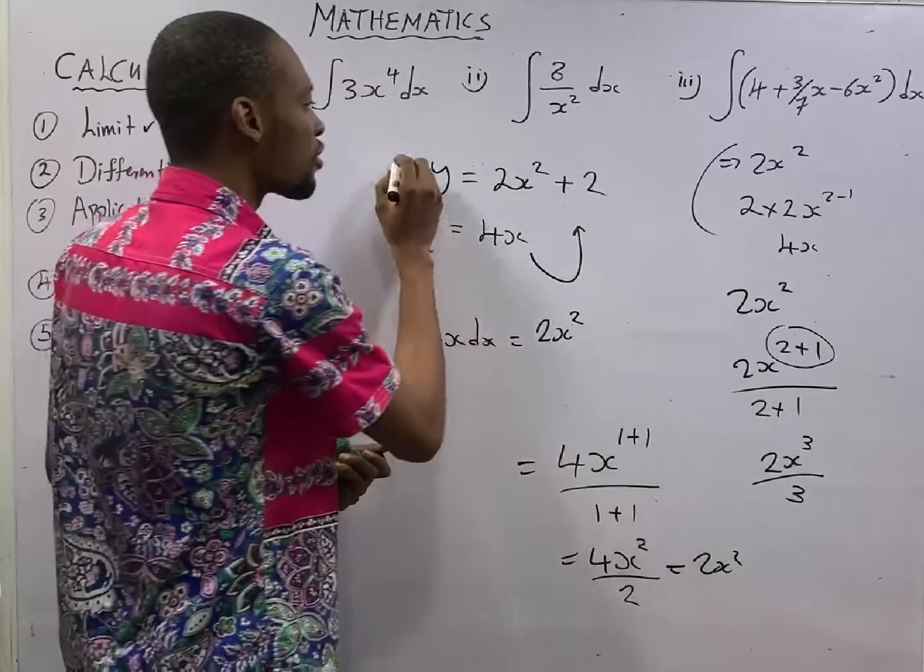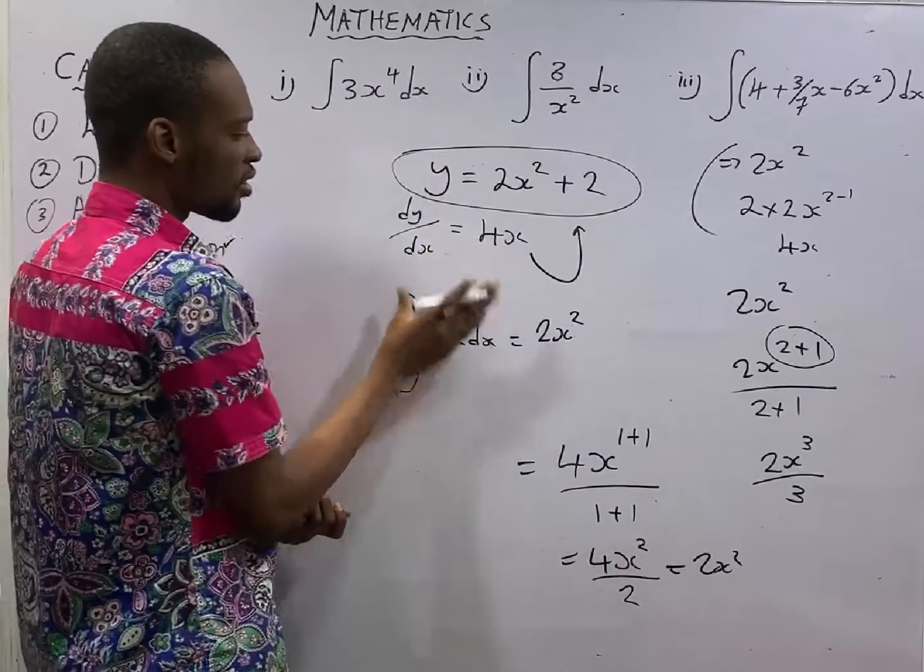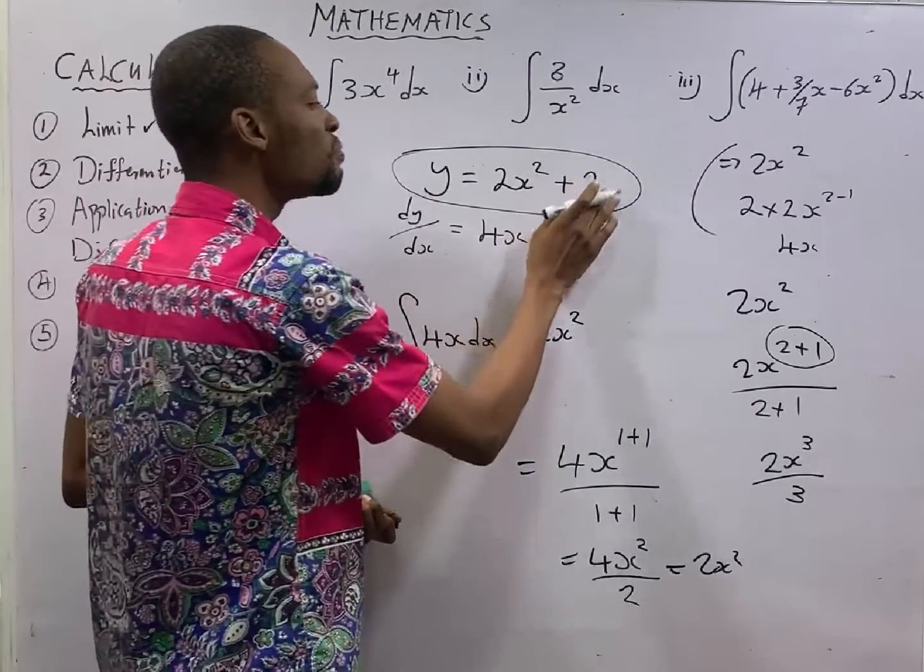So, look at this issue now. This is the original function, right? Now, this is what we made. We integrated, we actually got what we made. But, something is missing, a constant.